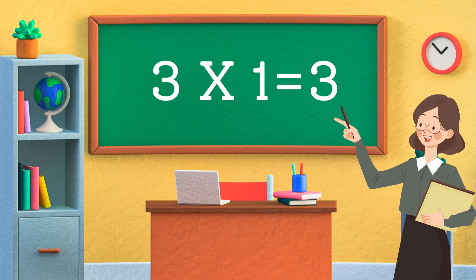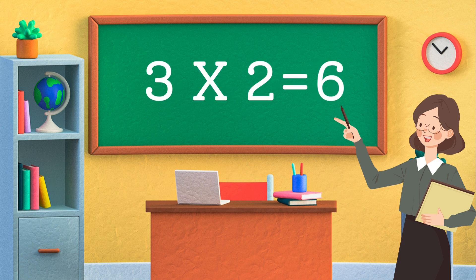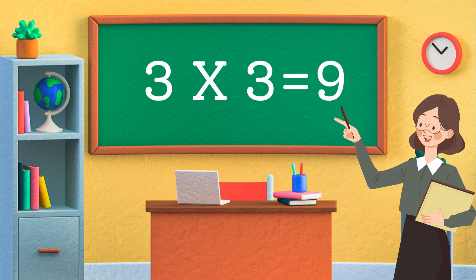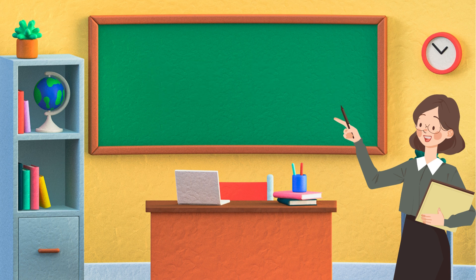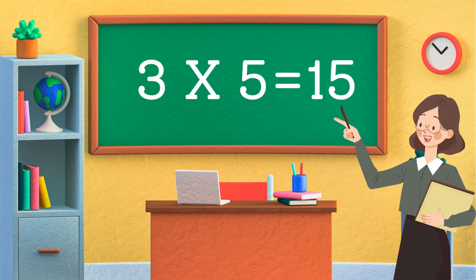Three ones are three. Three twos are six. Three threes are nine. Three fours are twelve. Three fives are fifteen.